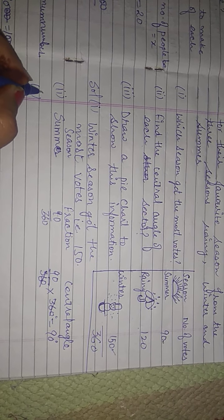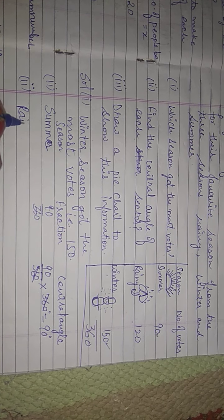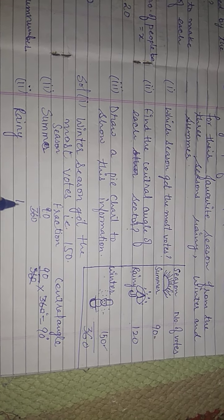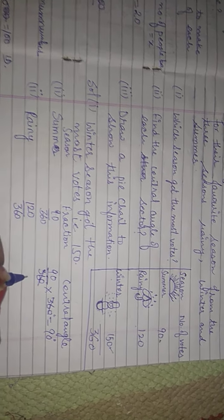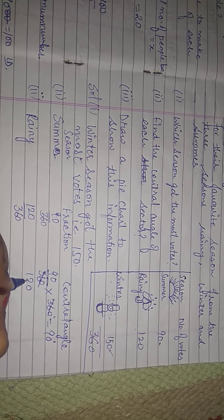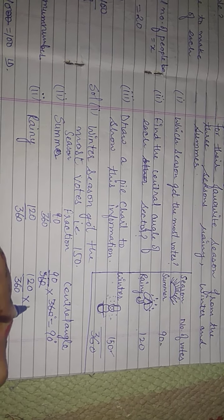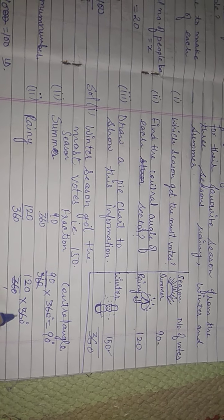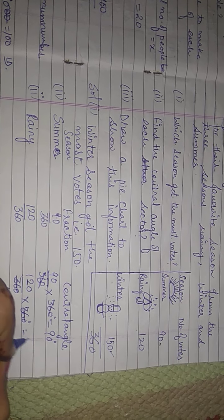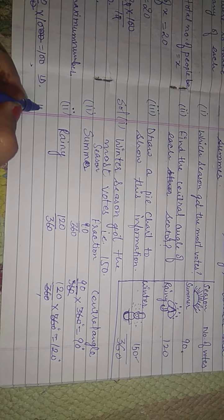For the second part, rainy season: the fraction is 120 over total, that is 120 over 360. Then 120 over 360, multiplied by 360 degrees. The central angle we get is 120 degrees.